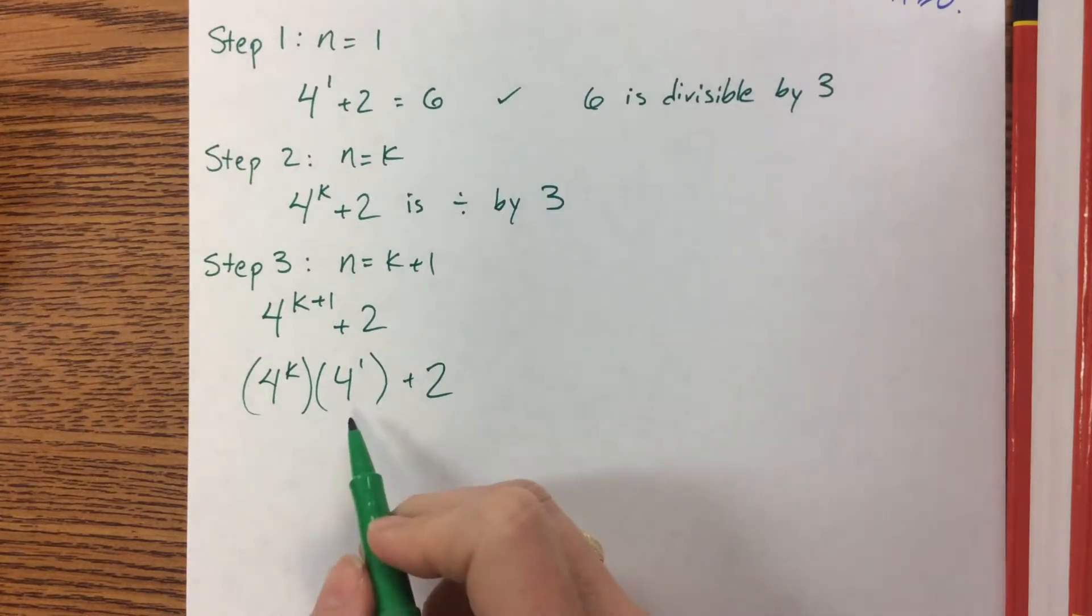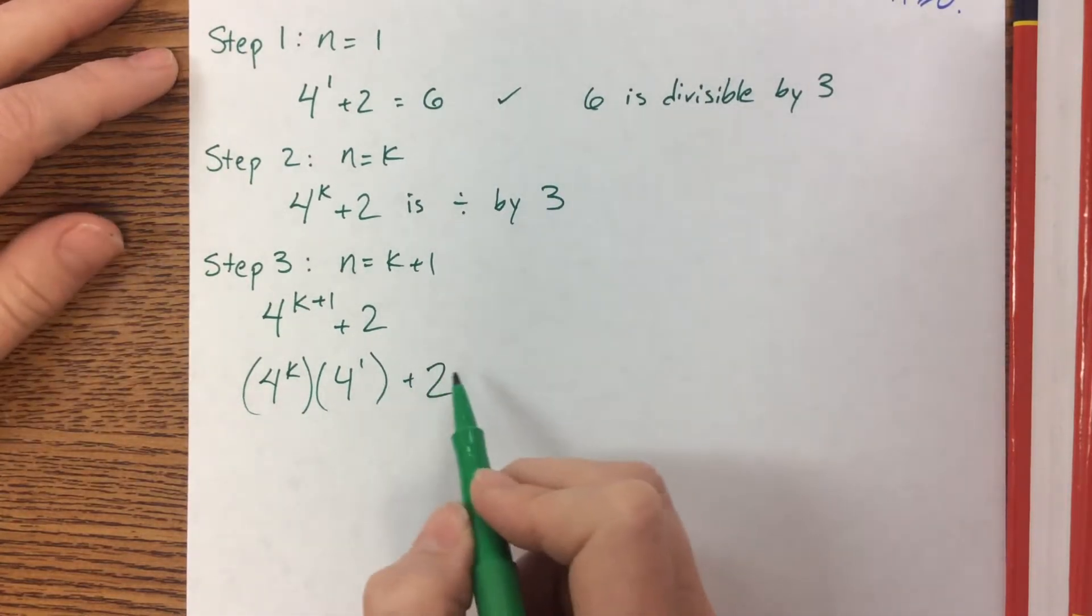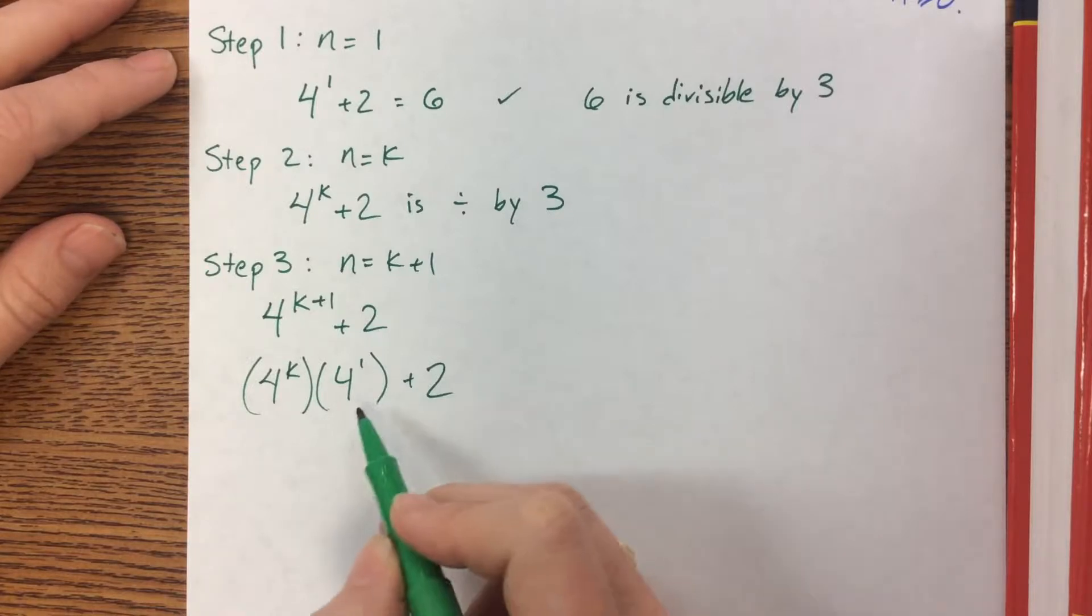So one option might be to manipulate this part so that it's also being multiplied by 4, so that I could factor out a 4 from both of those terms.